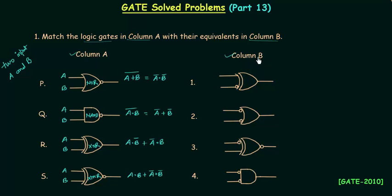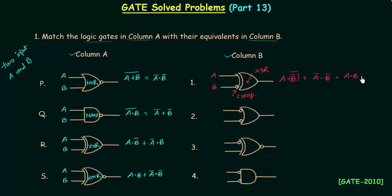Now we move to column B. In the first gate there is one bubble, which denotes the complement operation. With inputs A and B, B is complemented and fed into an XOR gate. The output is A·B complement, all complemented, OR A complement·B complement. Simplifying gives A·B OR A complement·B complement. For the second gate there are two bubbles, so both A and B are complemented and fed into an OR gate, giving A complement OR B complement.